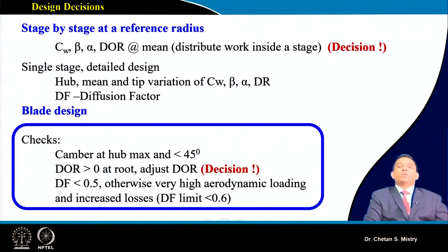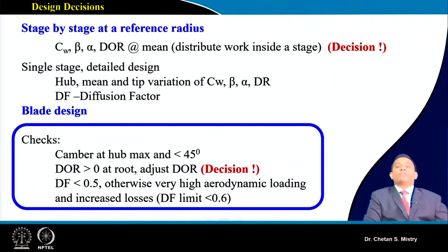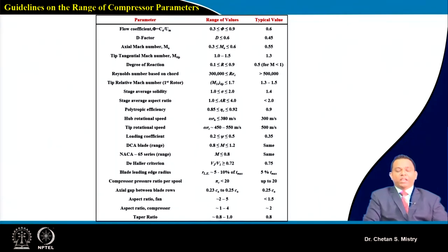Diffusion factor should not be more than 0.5, but for most modern designs the degree of reaction goes up to around 0.6. Some guidelines available in open literature: flow coefficient should be in the range of 0.3 to 0.9, with a preferred value of 0.6. This flow coefficient is defined sometimes at mid-section and sometimes at tip section, so you need to be careful about which reference is used.